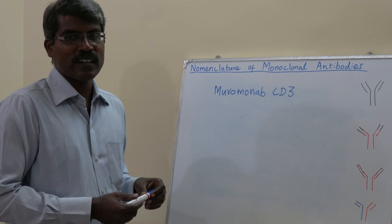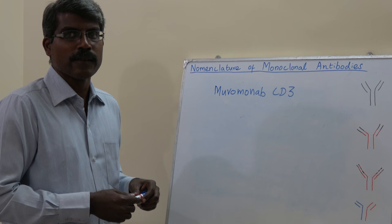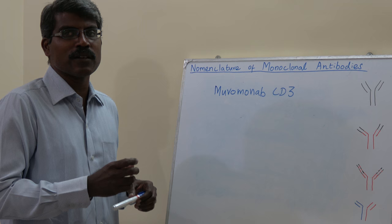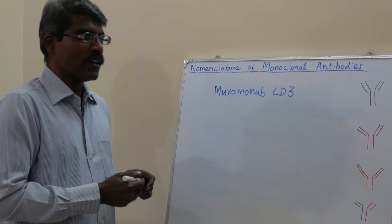The second rule covers conjugated monoclonal antibodies — those linked to either isotopes or drugs. These monoclonal antibodies usually have two words in their names.